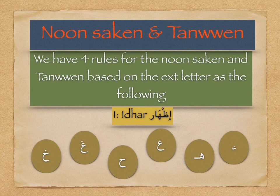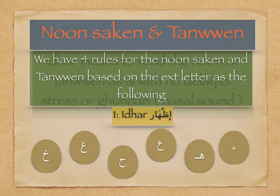For Noon Sakin and Tanween, we have four rules. Number one: Al-Izhaar. These rules are based on the next letters in the words or sentences. The letters of Al-Izhaar are: Hamza, Ha, Ayn, Ha, Ghayn, and Kha.